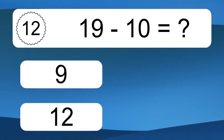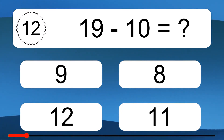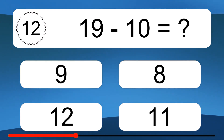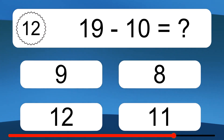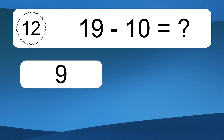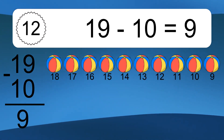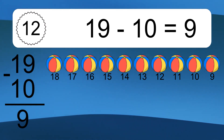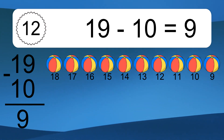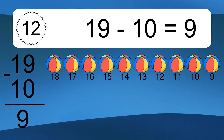19 minus 10 equals what? 19 minus 10 equals 9. Let's count it: 18, 17, 16, 15, 14, 13, 12, 11, 10, 9.